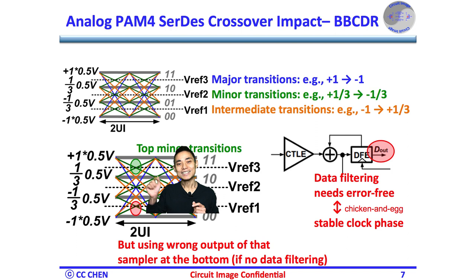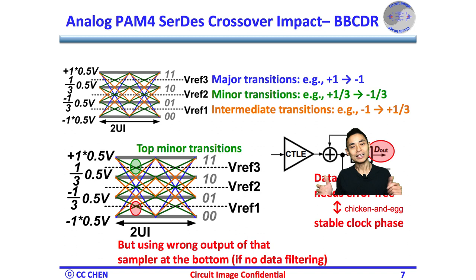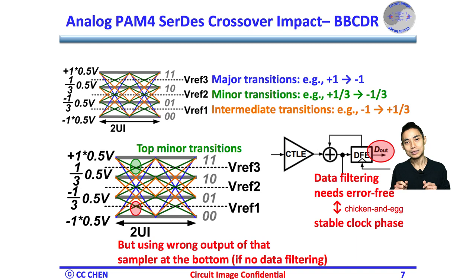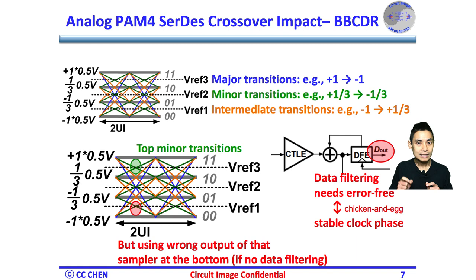Since the Bang-Bang CDR is very sensitive to the PAM4 transition between data levels, you must apply data filtering to avoid jitter degradation from data pattern dependency. The data filtering assumes the right decision in the data sample. If there is any error propagation from the DFE, the Bang-Bang CDR jitter may cause a higher bit error rate. The bit error rate and data filtering for the Bang-Bang CDR create a chicken-and-egg problem.